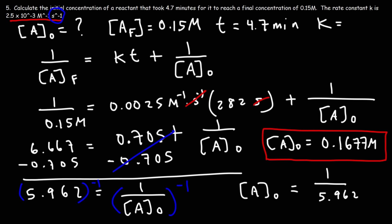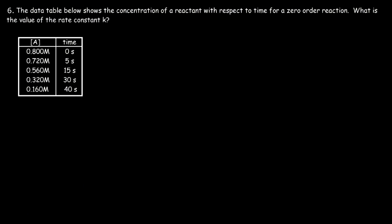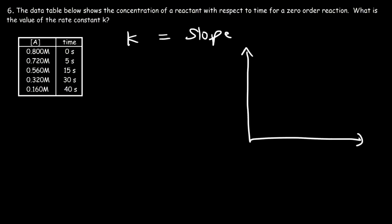When the order of the reaction is not specified, look at the units of K to determine the order. Problem 6: The data table shows the concentration of a reactant with respect to time for a zero order reaction. The rate constant K equals the negative of the slope when plotting A versus T. The slope equals change in concentration over change in time: 0.16 minus 0.8 divided by 40 seconds equals negative 0.016 M per second. Therefore K equals positive 0.016 M per second.